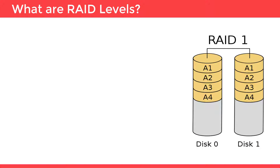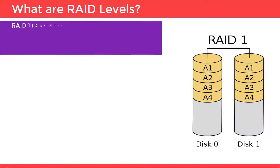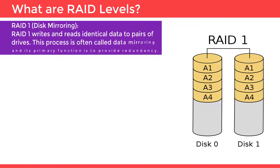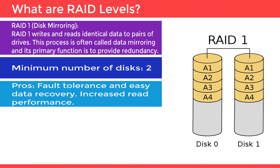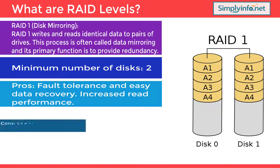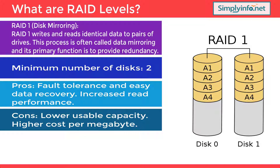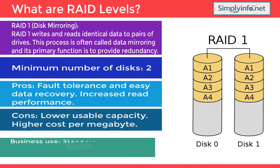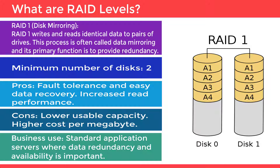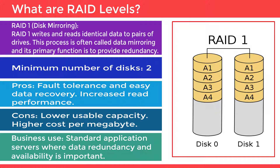RAID 1, otherwise called Disk Mirroring: RAID 1 writes and reads identical data to a pair of drives. This process is often called data mirroring and its primary function is to provide redundancy. Minimum number of disks required is two. Pros: fault tolerance and easy data recovery, and increased read performance. Cons: lower usable capacity and high cost per megabyte. Business use: standard application servers where data redundancy and availability is important. An attached image shows how a RAID 1 configuration is done.